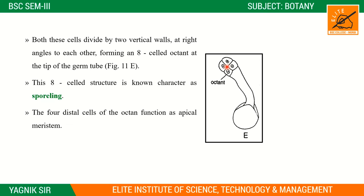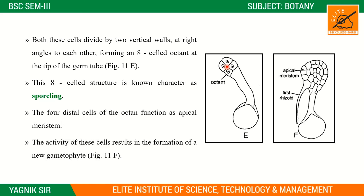The four distal cells of the octant function as the apical meristem. The activity of these cells results in the formation of the new gametophyte through continuous cell division.